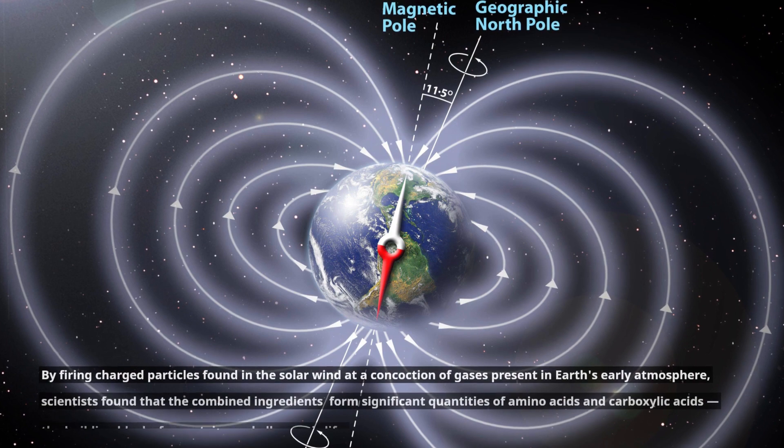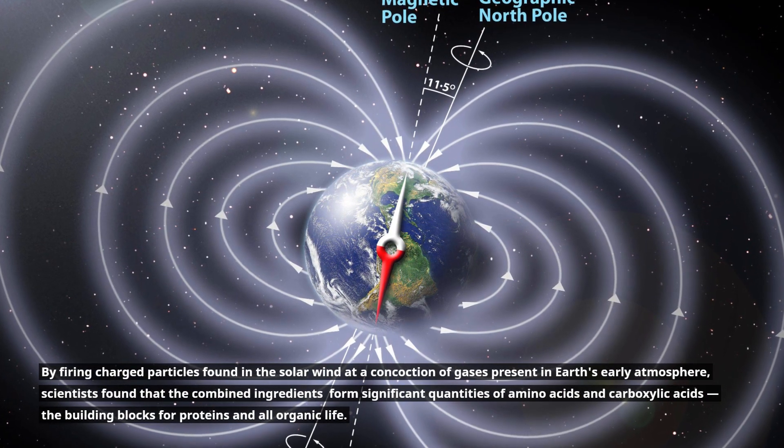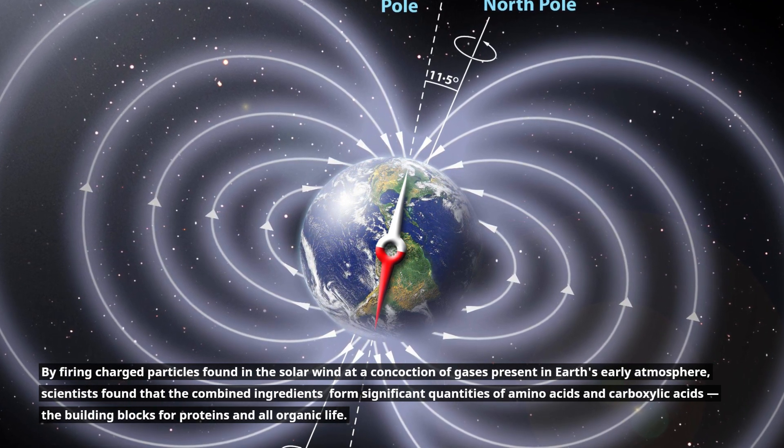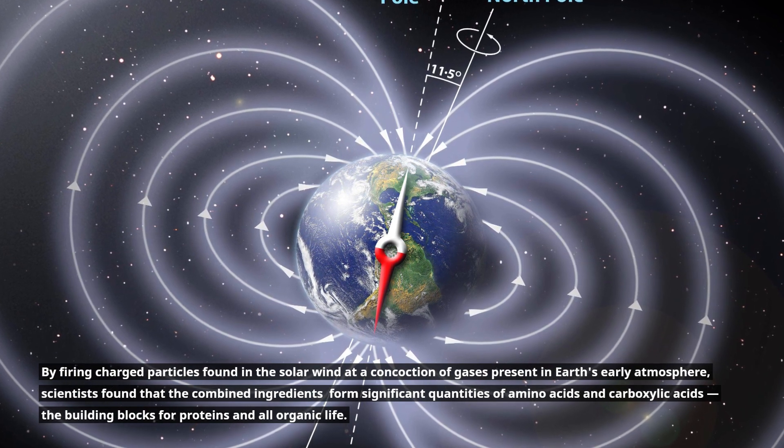By firing charged particles found in the solar wind at a concoction of gases present in Earth's early atmosphere, scientists found that the combined ingredients form significant quantities of amino acids and carboxylic acids, the building blocks for proteins and all organic life.